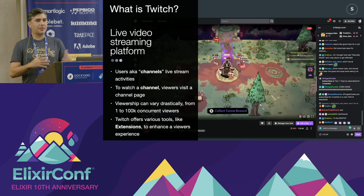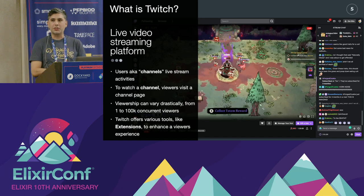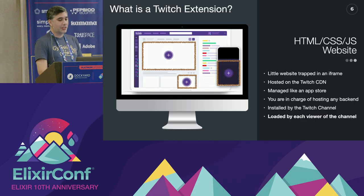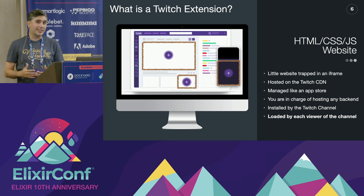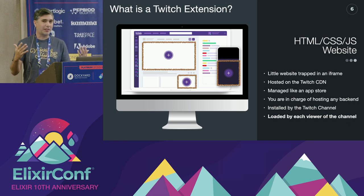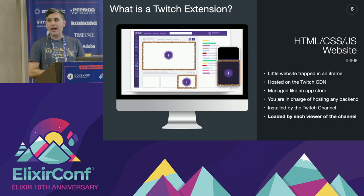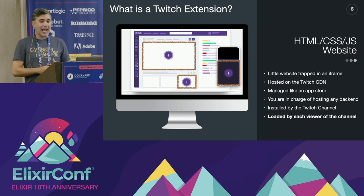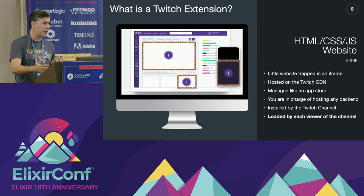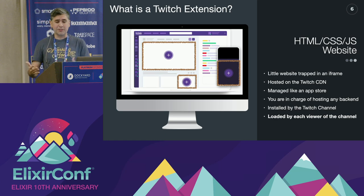Twitch offers a plethora of different tools to allow a channel to enhance the viewer experience, one of those being extensions. So what is a Twitch extension? A Twitch extension is an HTML, CSS, JavaScript website — just a web app living in an iframe. The app itself is hosted on the Twitch CDN, and it is managed kind of like an app store. You have to submit the Twitch extension and it goes through a review process that can take a week to two weeks.